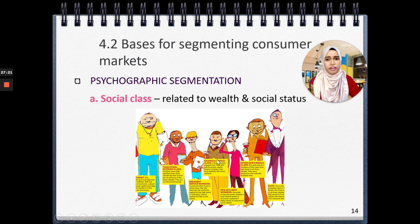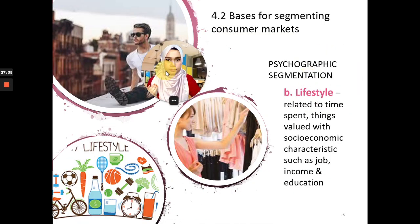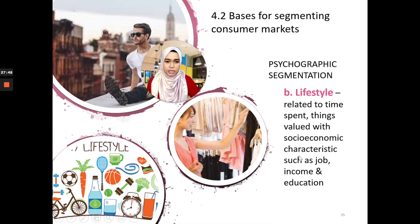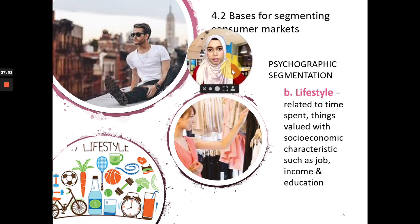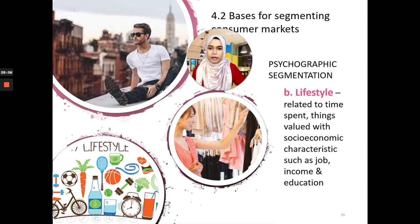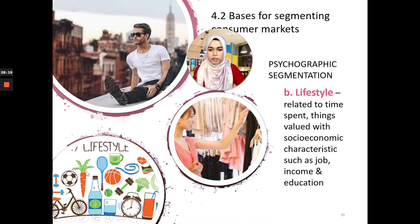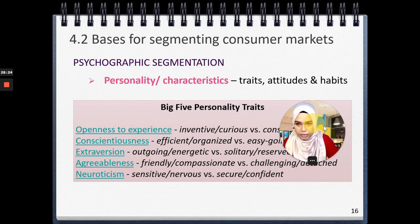The lifestyle variable in psychographic segmentation is related to how people spend time and what they value, including socioeconomic characteristics such as job, income, and education. Some people love to travel everywhere, some prefer shopping, while others live active and healthy lifestyles. Those with active lifestyles typically buy sports equipment, healthy food, and healthy drinks.